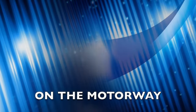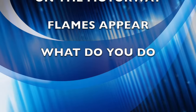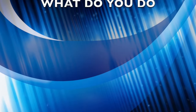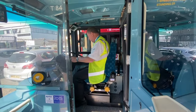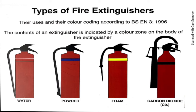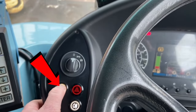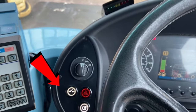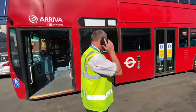You are driving on the motorway and flames appear from the engine compartment. The examiner is going to ask you what the procedure is. You will stop as quickly and safely as possible on the hard shoulder. You will need to identify the correct fire extinguisher to use for an electrical fire, which would in this case be CO2 or powder. You would then isolate the vehicle and know how to contact the emergency services.